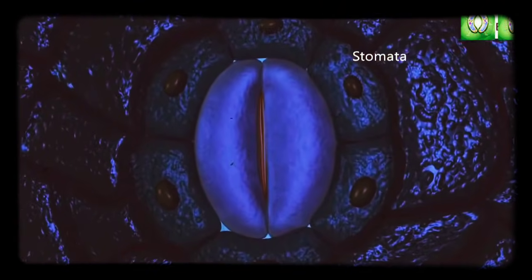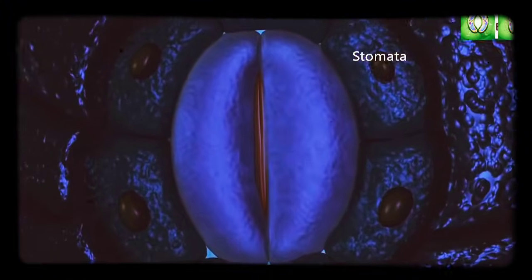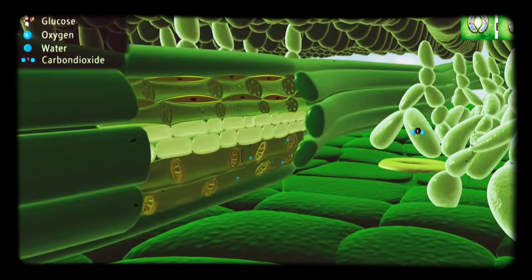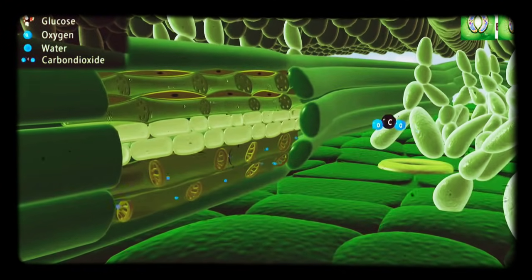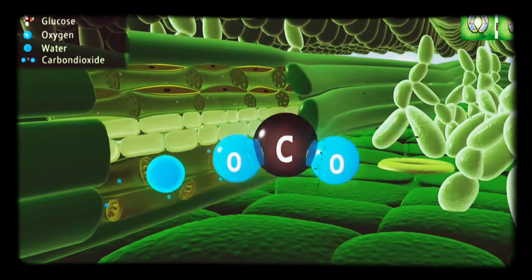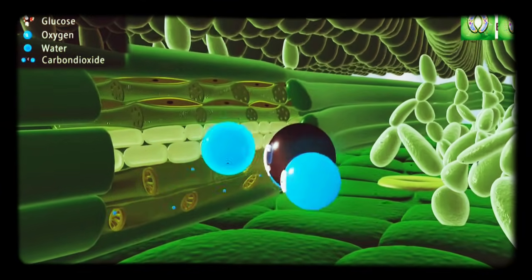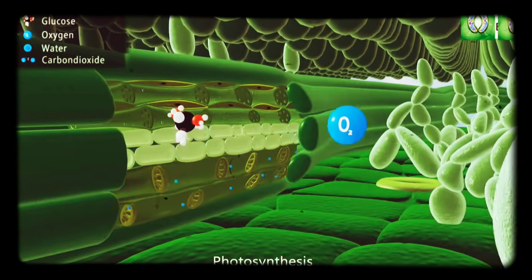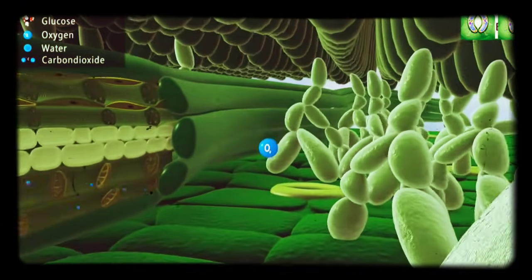Stomata also act as main sites of gaseous exchange in plants. Leaves make use of water and carbon dioxide for photosynthesis. Glucose formed during photosynthesis is transported to other parts of the body through phloem cells.